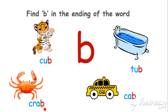Let's look for B in the word 'crab'. Yes, here is a B sound. Good job! Do you know what a cub is? A cub is a baby tiger. Let's look for B in the word 'cub'. Yes, here is a B sound. Good job — at the end of the word.